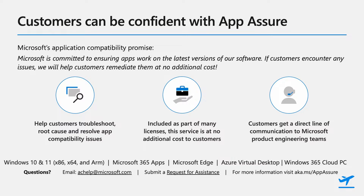A quick introduction about AppAzure. Windows is built with compatibility in mind, ensuring the OS is compatible by design. AppAzure was launched in 2018 to provide confidence to customers that their applications would work on the latest versions of our software, and if not, AppAzure will help them fix those issues at no additional cost. We currently support Windows 10, Windows 11, Microsoft 365 Apps, Microsoft Edge, Azure Virtual Desktop, and Windows 365 Cloud PC. If a customer runs into app compatibility issues adopting any of these products, AppAzure helps fix those issues at no additional cost. Microsoft engineers work with customers to troubleshoot and provide solutions. If we identify a product bug, we have a direct escalation line into product engineering teams to fix it as a priority. Customers can request support by submitting a request in the Microsoft FastTrack portal or by emailing achelp@microsoft.com.